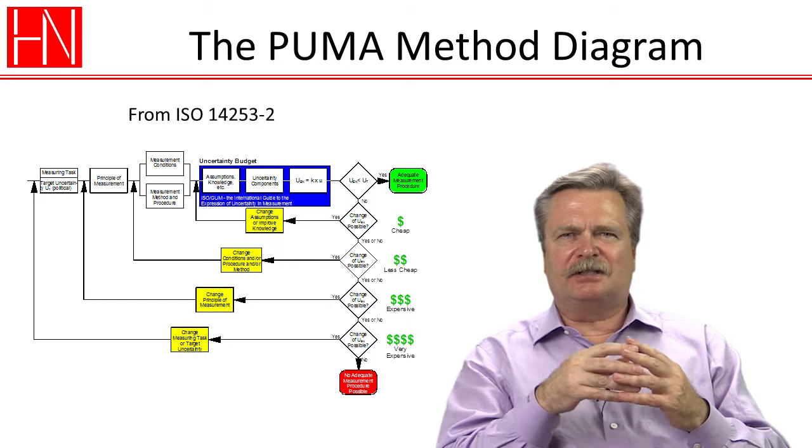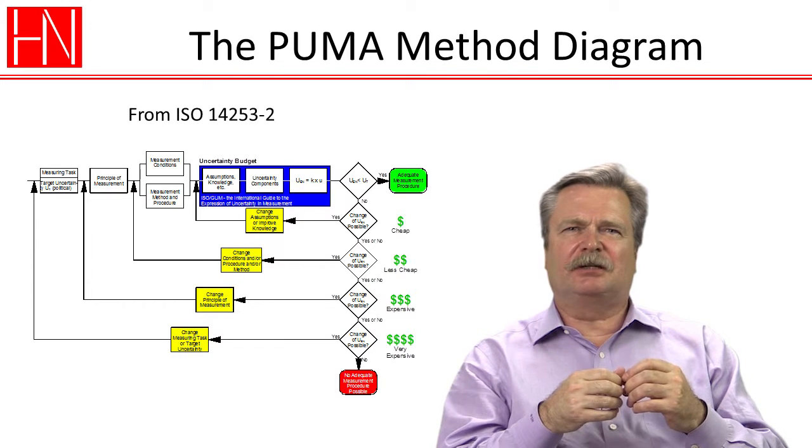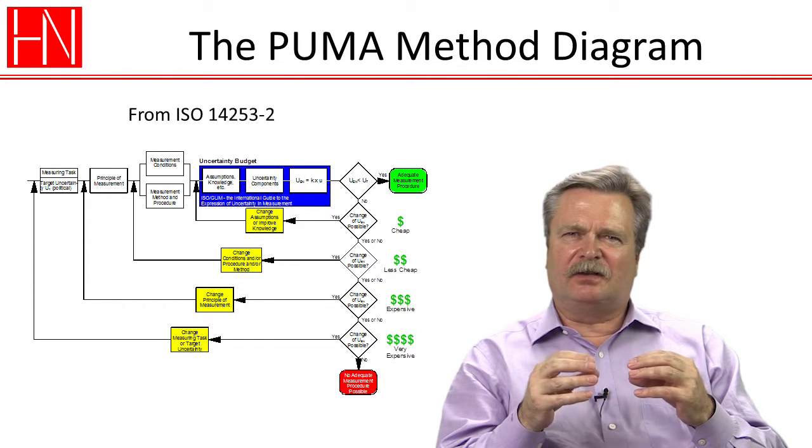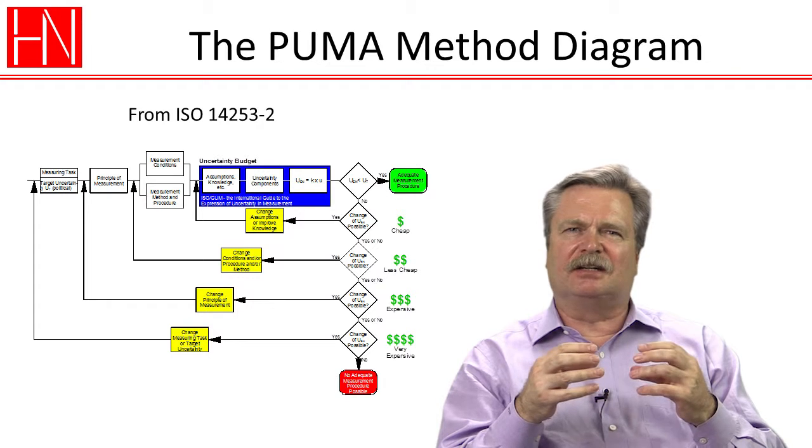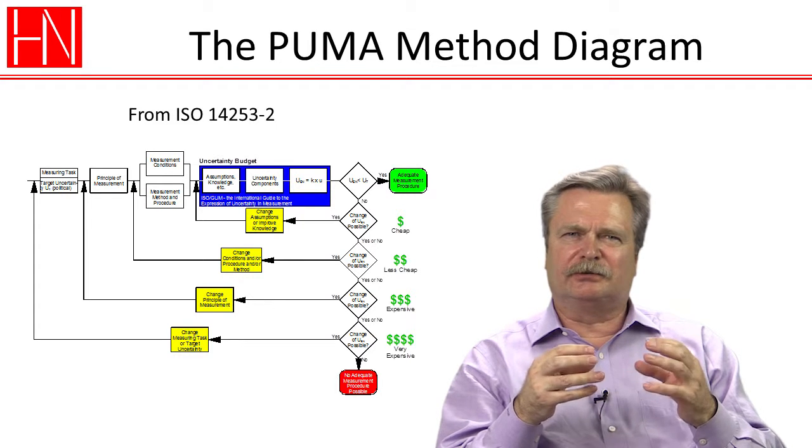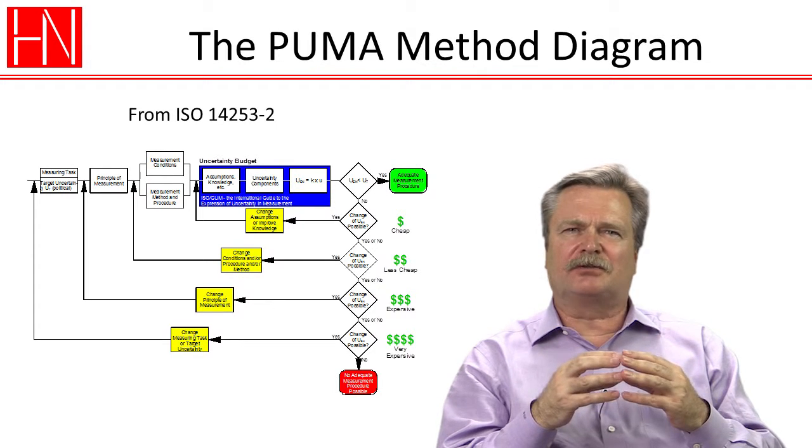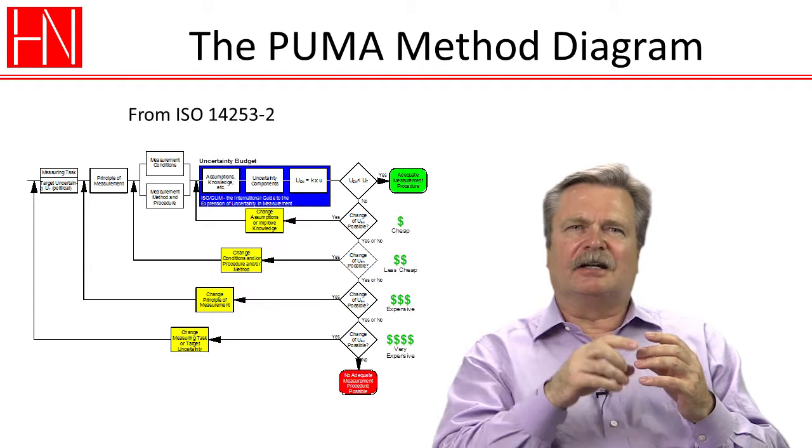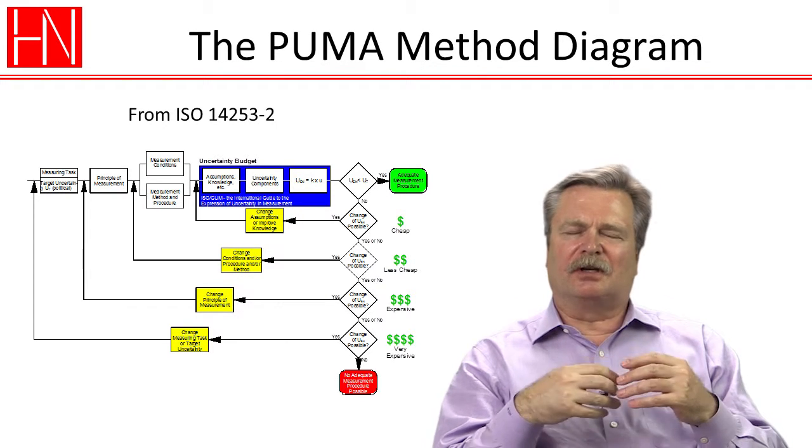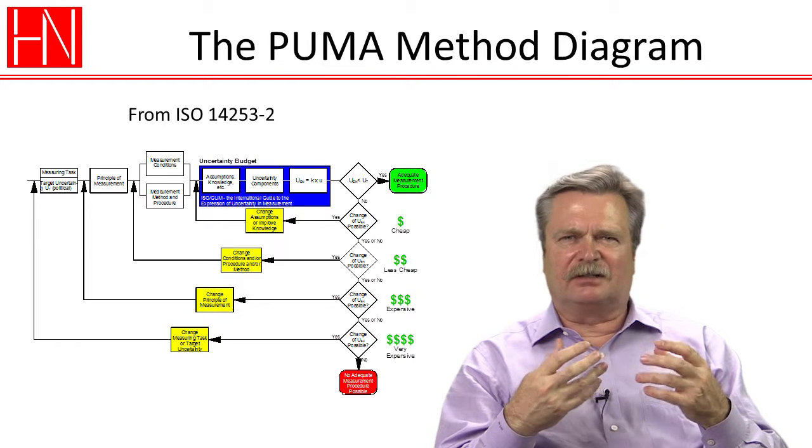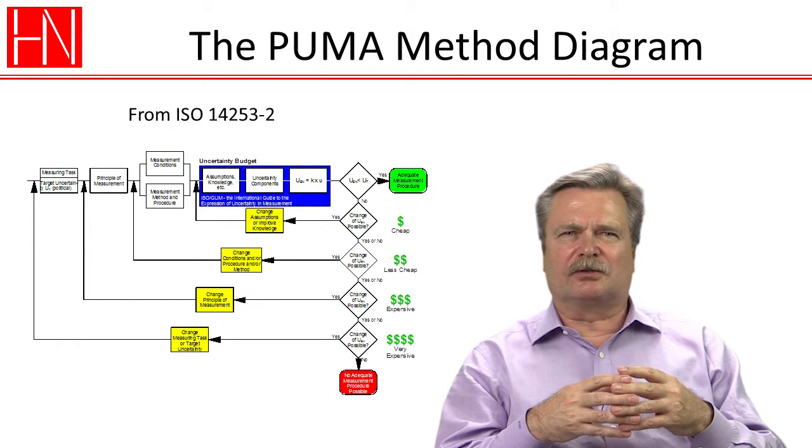And so we have these iteration loops where basically we first look at the things that are easy and inexpensive to use to try to tweak the measuring process and the uncertainty. And then as the loops get bigger and bigger, it's more and more involved and gets more expensive to make those corrections.